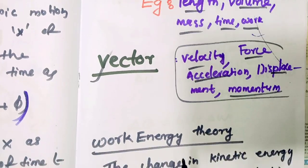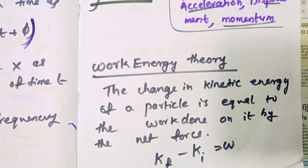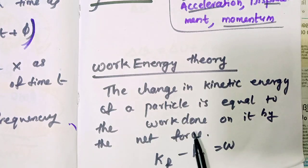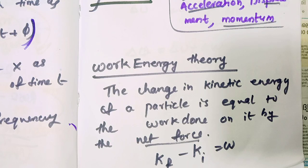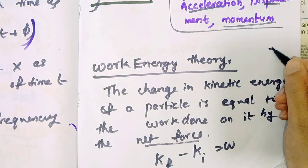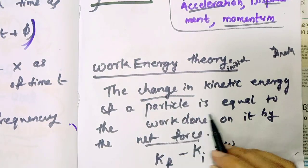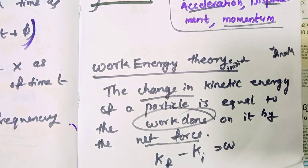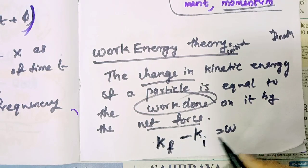The scalar quantities have only value, like work and energy. Let's talk about the work-energy theorem. The change in kinetic energy of a particle is equal to the work done on it by the net force. The expression is: Kf minus Ki equals work done, which means final kinetic energy minus initial kinetic energy is our work done.